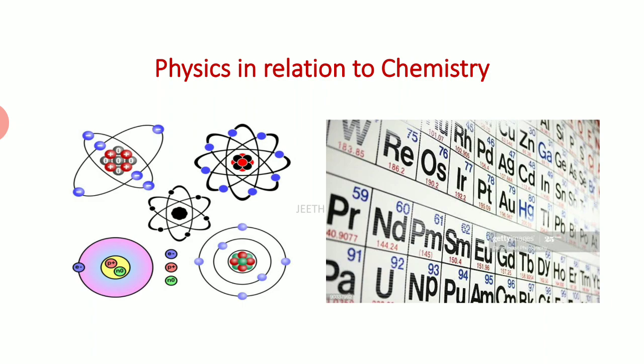And also, because of the development of these technology, they were able to study the valence band and valence and other bonding very clearly. Even in chemistry, we have one subject known as physical chemistry. One branch of chemistry is known as physical chemistry. That much impact physics has on chemistry.